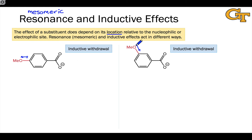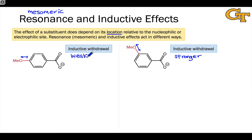In the meta isomer, the methoxy group is closer to the negatively charged benzoate group, and is farther away in the para isomer. Because this methoxy is closer to the negative charge in the meta isomer, we would expect the inductive effect to be stronger in the meta isomer than in the para isomer. The closer the electronegative group, the stronger the inductive effect — meaning that inductively, the methoxy group is more stabilizing in the meta isomer than in the para isomer.